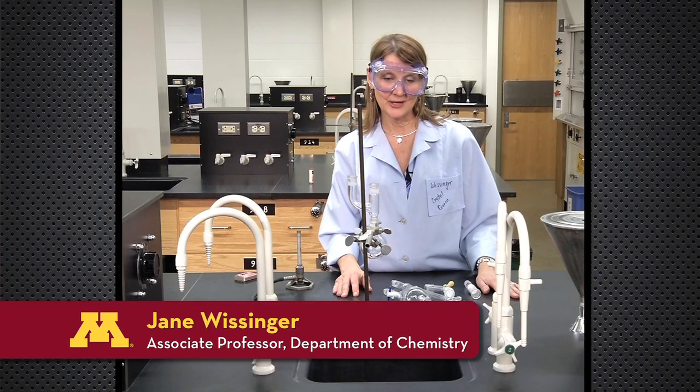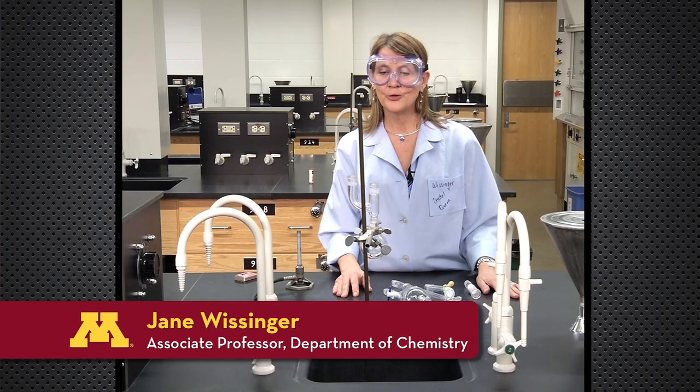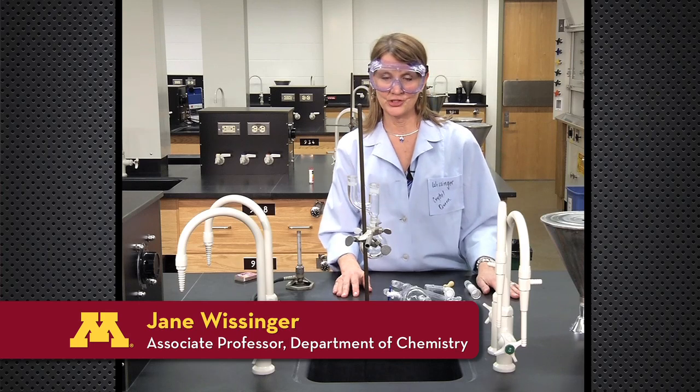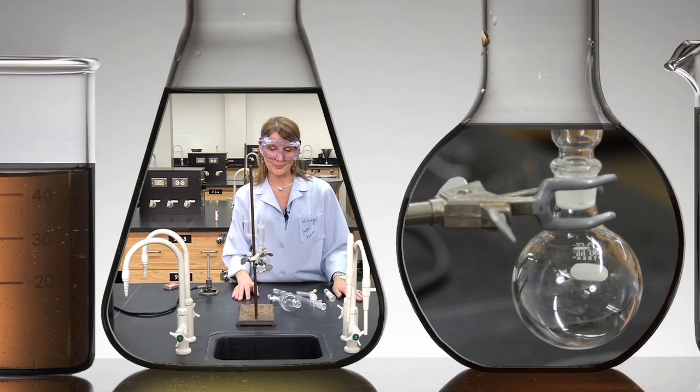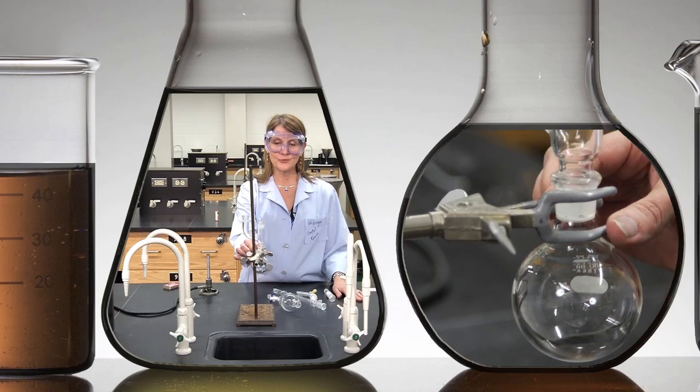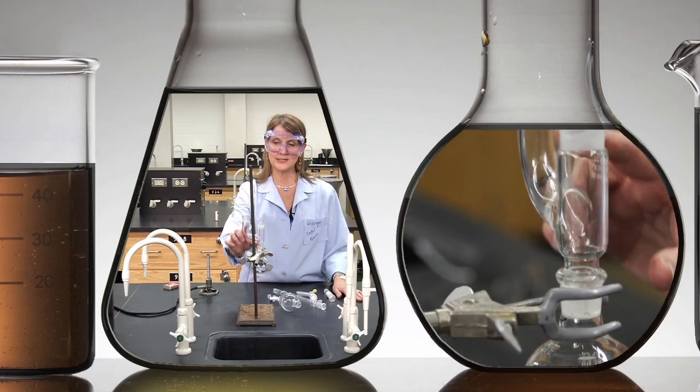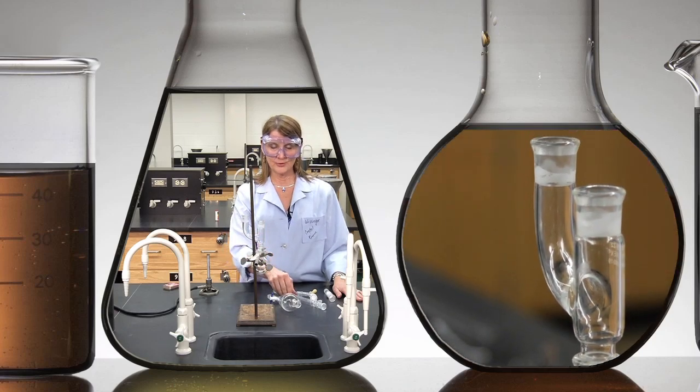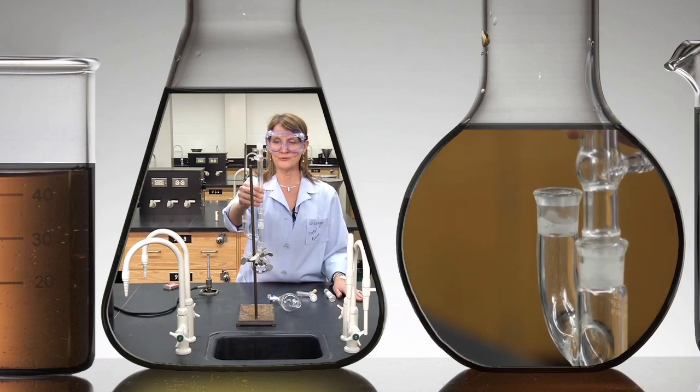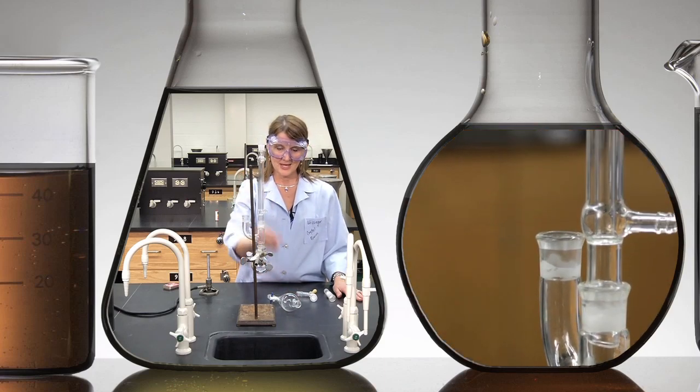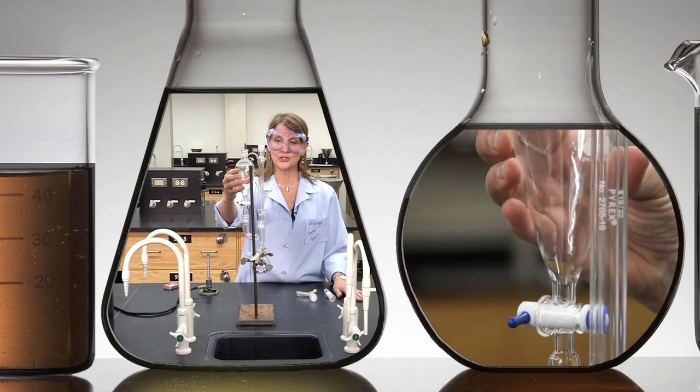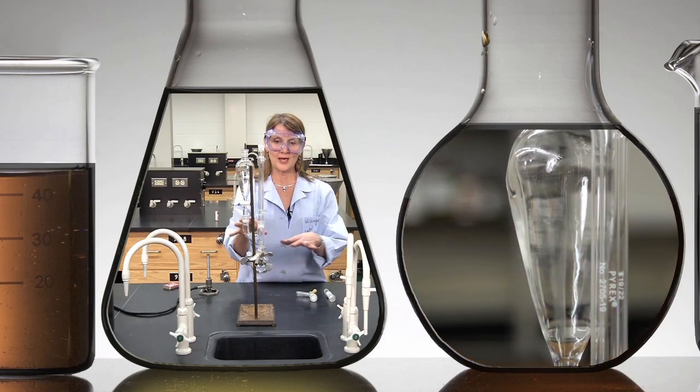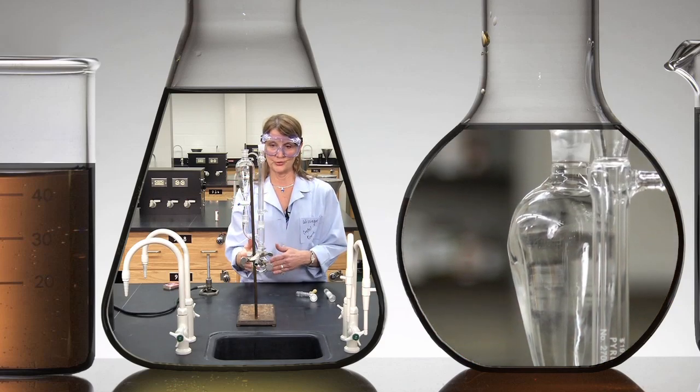Many organometallic reactions like the Grignard reaction require anhydrous conditions, that is the total exclusion of water. To build such an apparatus, we start with the reaction flask and then add the Claisen adapter to allow addition of both a reflux condenser and an addition funnel so that we can add reagents during the reaction without taking it apart and introducing water.